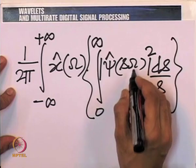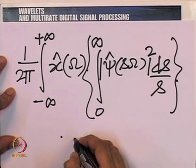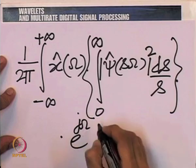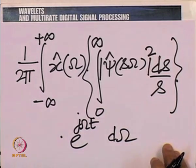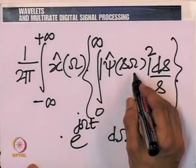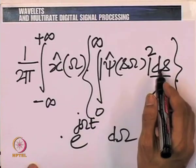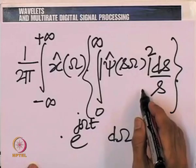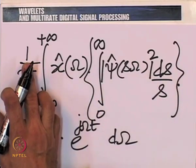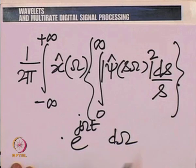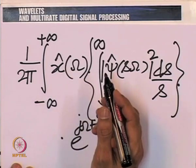This expression seemed dependent on ω, but we want to do away with the dependence on ω. The expression includes a factor e^(jωt) integrated over ω. Had this inner integral been independent of ω, it would just be a constant that could be extracted, and what would remain is the inverse Fourier transform of X̂(ω), which is just x(t).